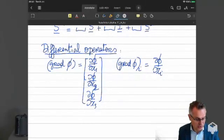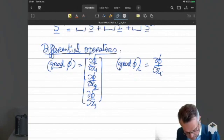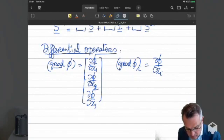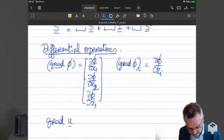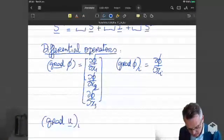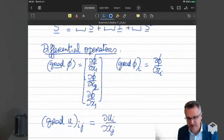We can also define the gradient of a vector. And that's going to be a tensor. A matrix with components du_i dx_j.